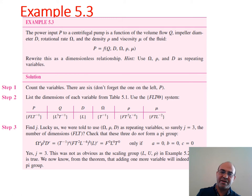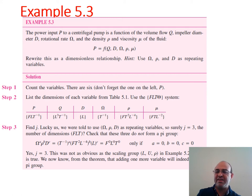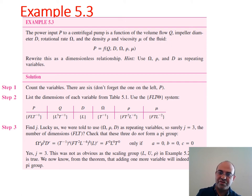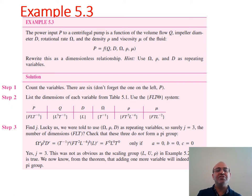We want to rewrite this as a dimensionless relationship. The hint suggests using ω, ρ, and D as repeating variables. There are six variables total (n = 6) and three fundamental dimensions (j = 3). In this example, instead of the MLT system we use the FLT system, where force F is the fundamental dimension rather than mass.